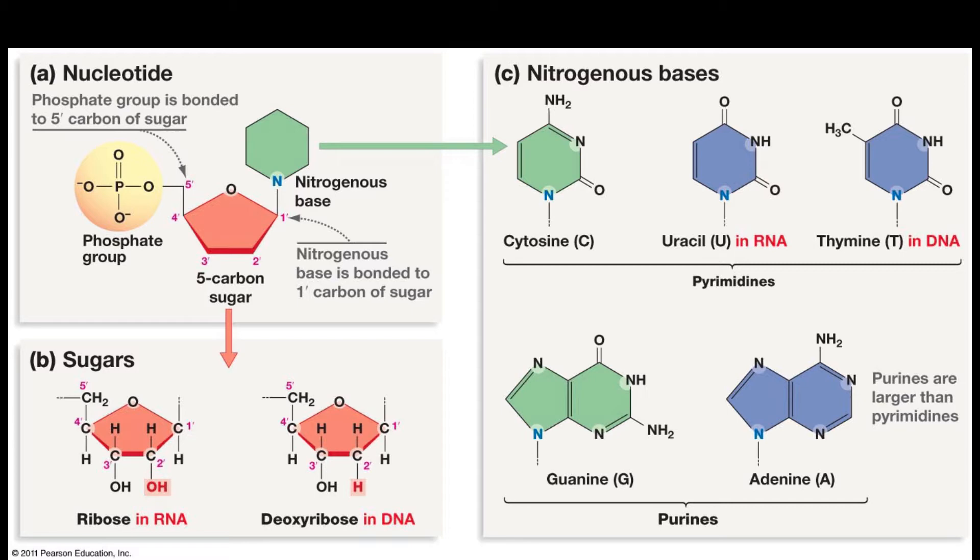Deoxyribonucleic acid, or DNA, and ribonucleic acid, or RNA, are both nucleic acids. Like all macromolecules, nucleic acids are made of building blocks, or monomers.